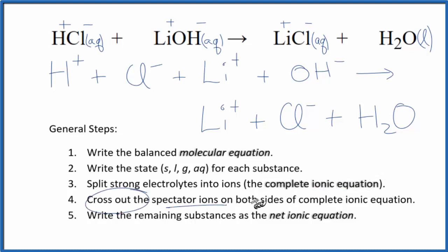Now we can cross out these spectator ions. They're on both sides of the net ionic equation. They don't change, so we're really not interested in them as chemists. So in the reactants right here, I see there's a chloride ion. I also see a chloride ion in the products. Let's just cross that out. I have a lithium ion here, lithium ion here. Let's cross it out.